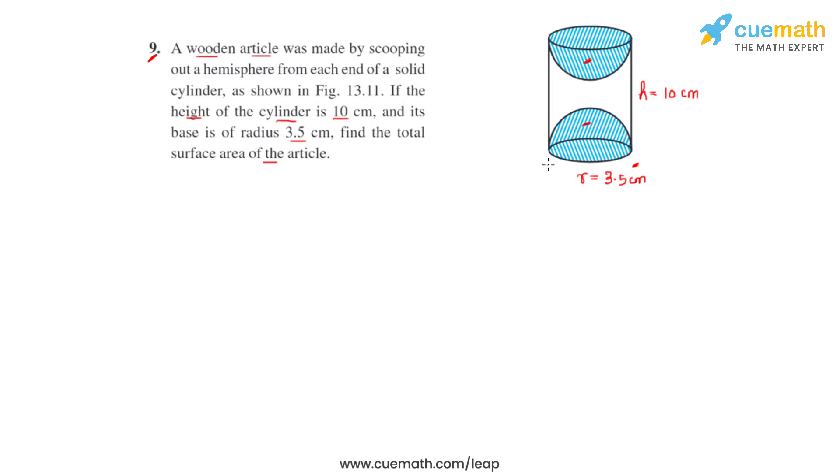So we include the curved surface area of the two hemispheres plus the curved surface area of the cylinder. With this information, we can write that the total surface area of the article formed will be equal to 2 times the curved surface area of the hemisphere, because we have scooped out two hemispheres, one from each of the ends of the cylinder, plus the curved surface area of the cylinder itself.